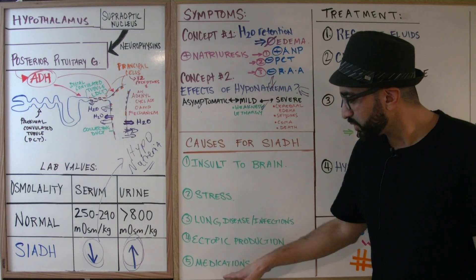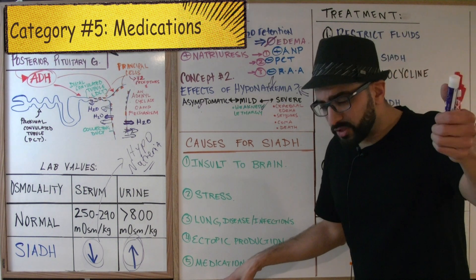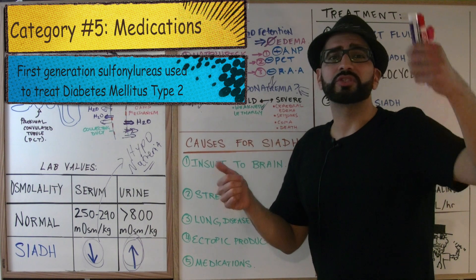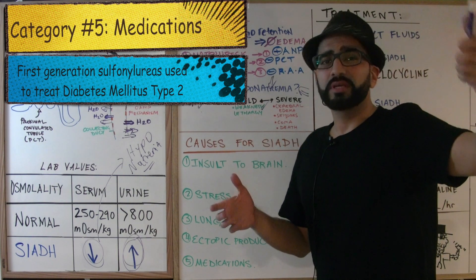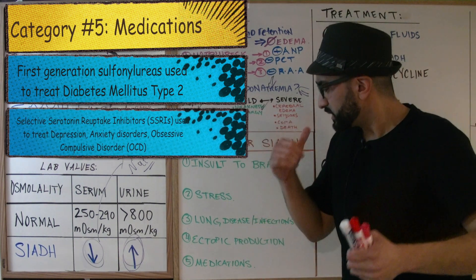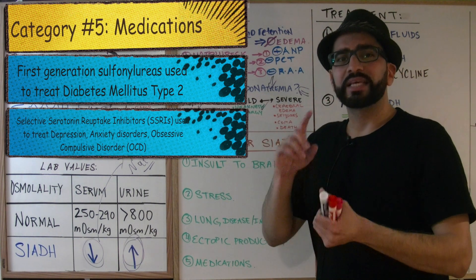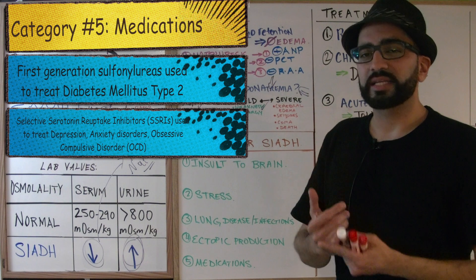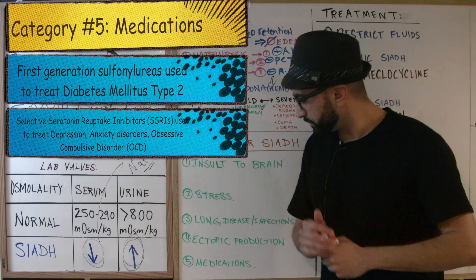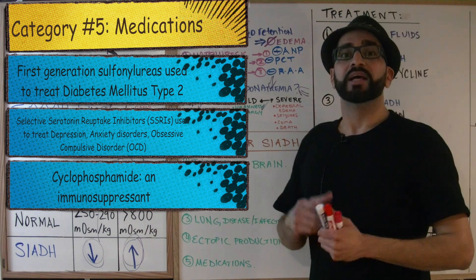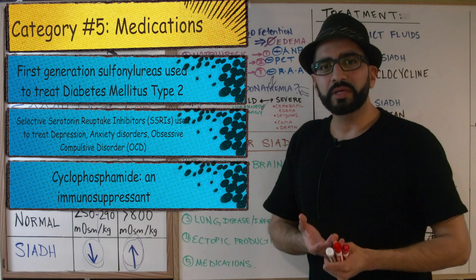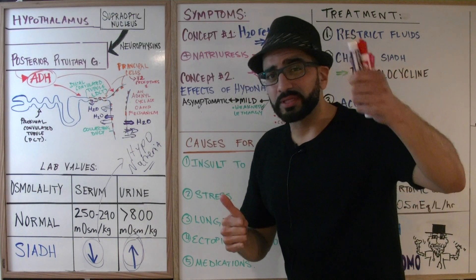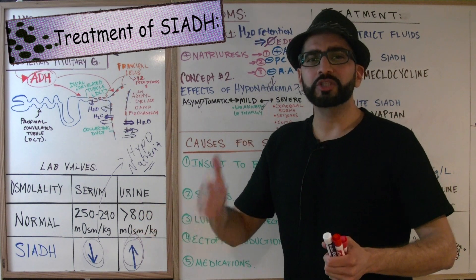The fifth category is medications. Three key groups to know: sulfonylureas, used to treat diabetes mellitus; SSRIs (selective serotonin reuptake inhibitors), used to treat depression, anxiety, and OCD; and cyclophosphamide, a chemotherapy agent that suppresses the immune system. Make sure you know all of these causes for SIADH.